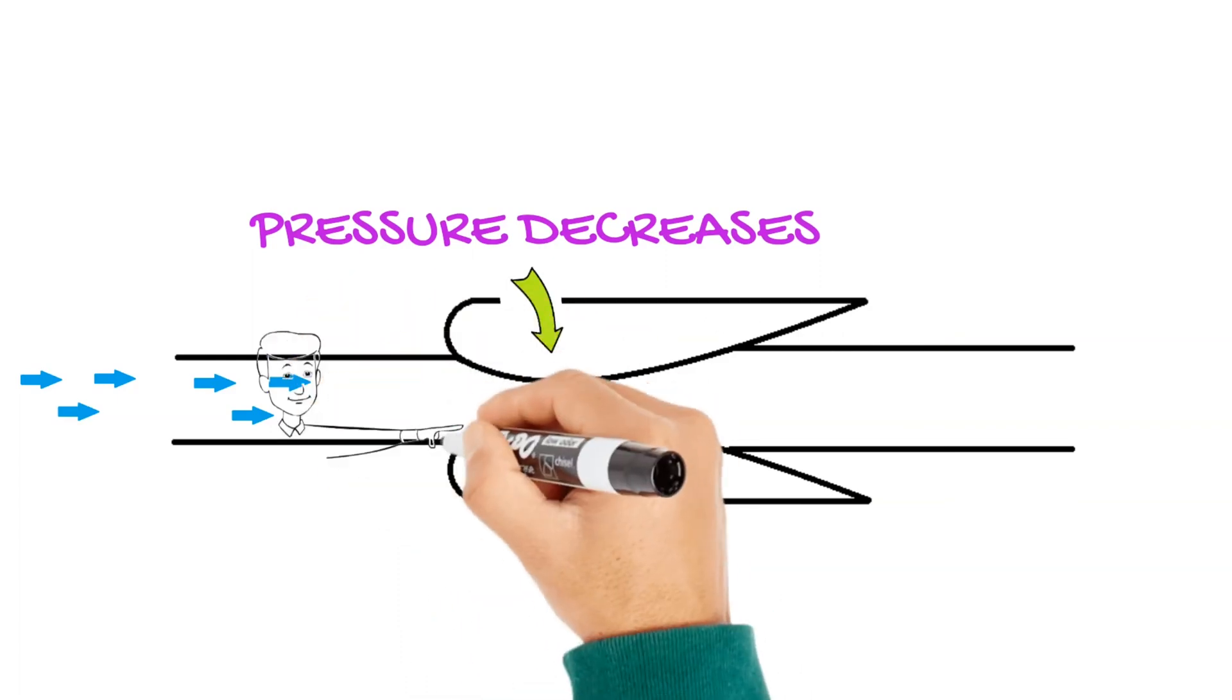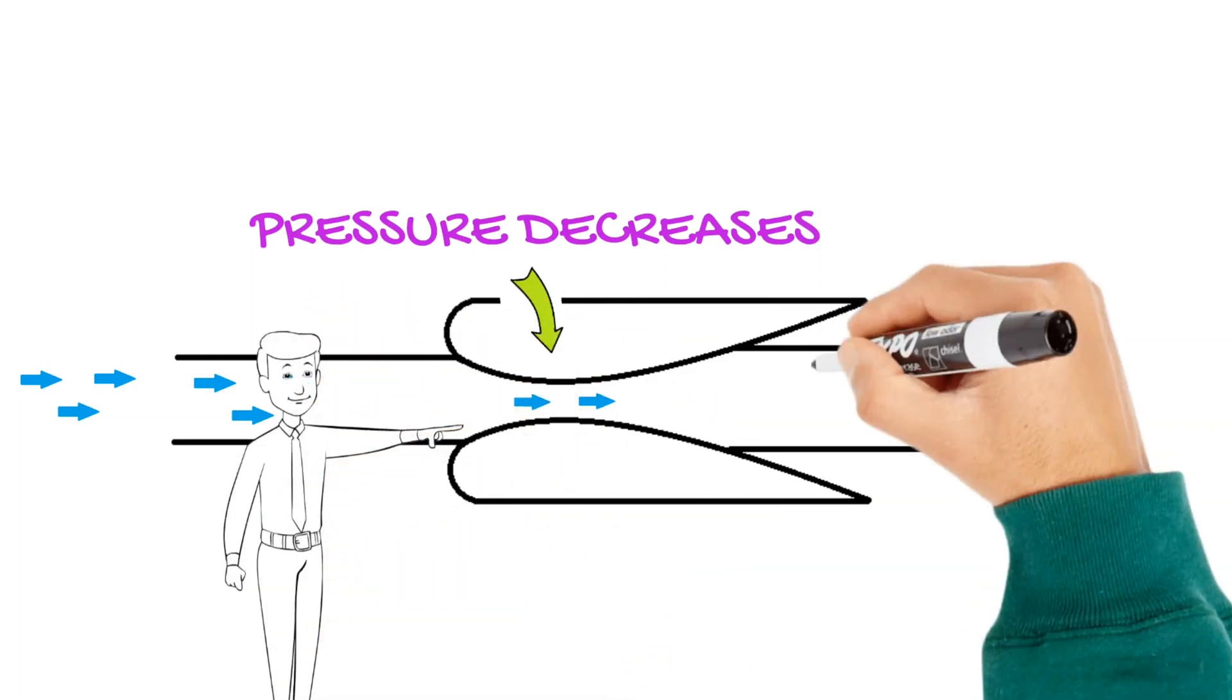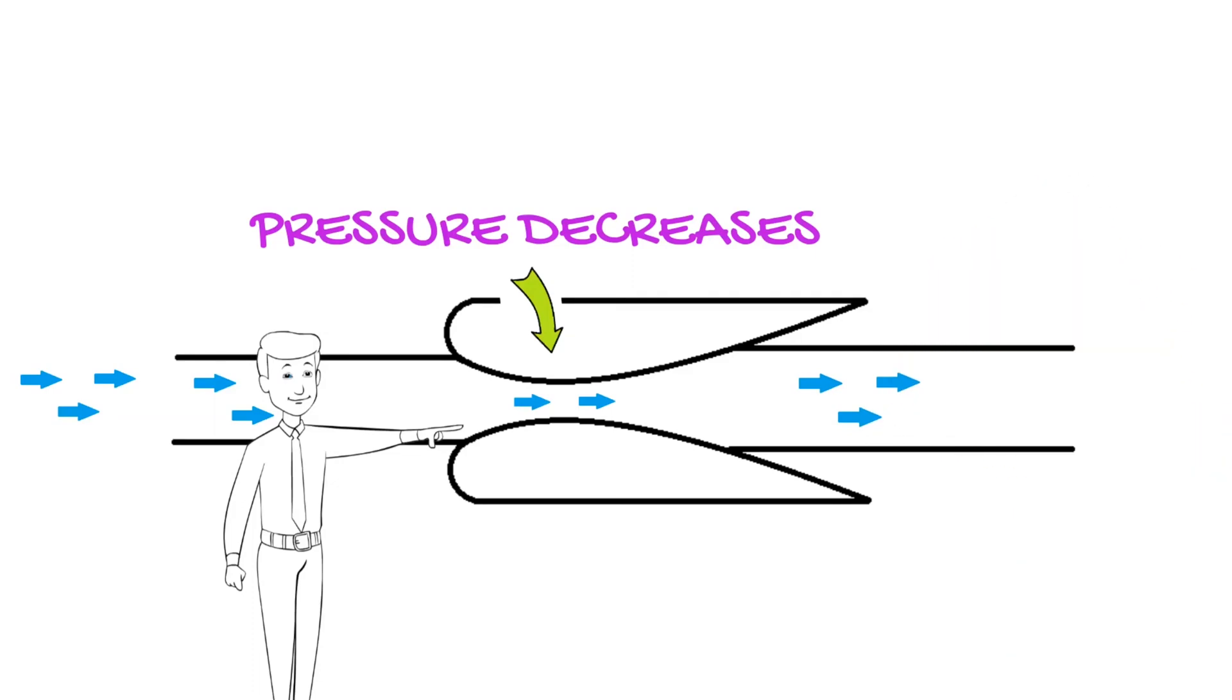Narrow areas like this, which are often called a venturi, force the fluid to increase its speed. And with that increase in speed we get a decrease in pressure.